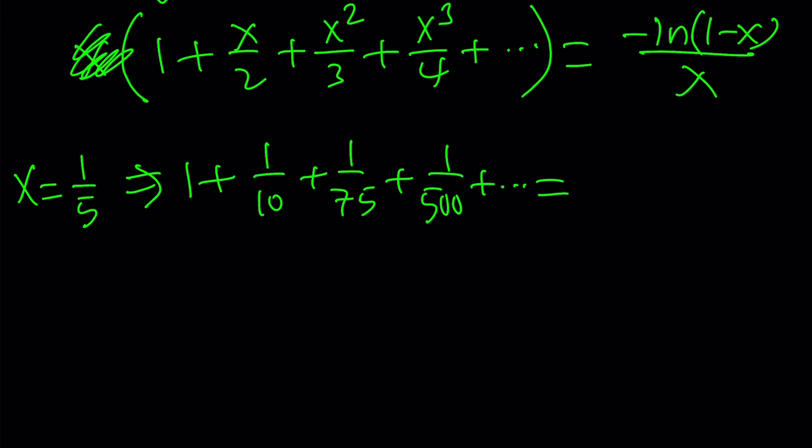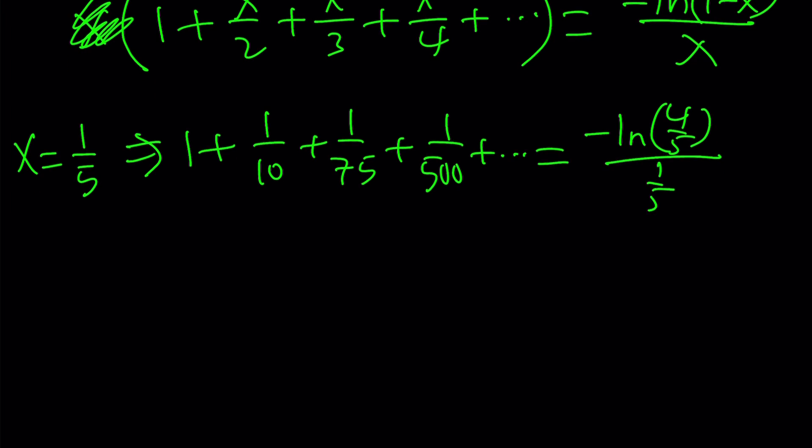Now, the right-hand side is more important because that's the answer. Negative ln 1 minus 1 fifth, which is 4 fifths, divided by 1 fifth. Put the 1 over 5 in the front. That's going to be negative 1 over 5 times ln 4 over 5. But guess what?